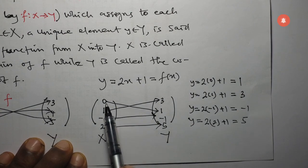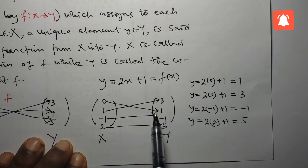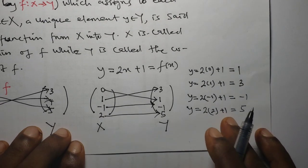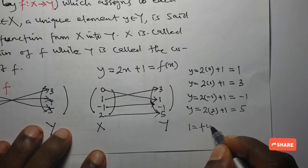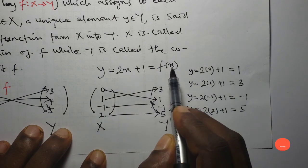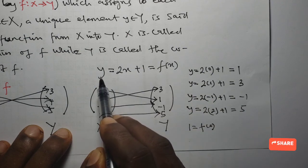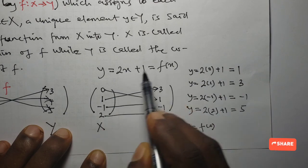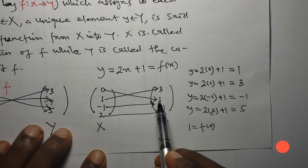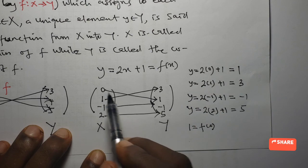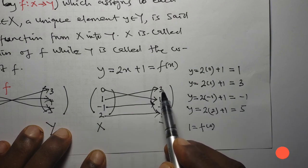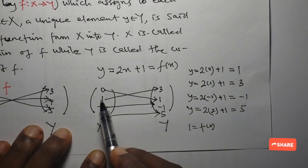Now, 0 has been mapped to 1. So in the language of functions, we say that 1 is the image of 0, and we write that as 1 = f(0). Since y = f(x), this simply means when I put the value of x into the function f, I get the corresponding value of y. So 1 = f(0), and we call 1 the image of 0 and 0 the pre-image of 1. Similarly, 1 from the domain has been mapped to 3, so 3 is the image of 1 and 1 is the pre-image of 3.